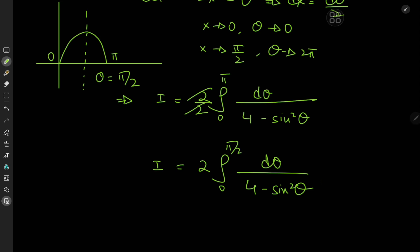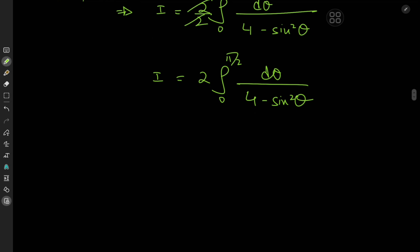Sine square theta is cool and all, but I like to see cosine functions instead because the subsequent expansions are much easier. We perform a phase shift going from the theta to the pi by 2 minus theta realm, which means that we have I now equal to twice the integral from 0 to pi by 2 of d theta with 4 minus cosine square theta now.